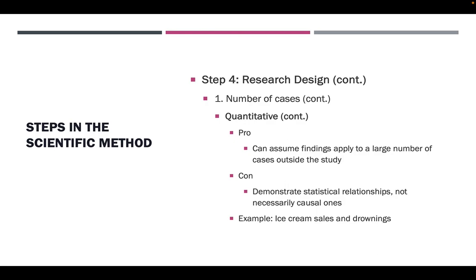Thus, our findings are more widely applied. A major disadvantage is that the relationships we discover using the large N approach are of a statistical nature, and not necessarily causal. There are many instances of statistically significant correlations being well-established for seemingly random activities. A famous example is that there is a very high statistical correlation between ice cream sales and drownings. One would be hard-pressed to say that one caused the other. Can ice cream cause drownings? Probably not, unless the ill-fated swimmer ingested an enormous amount of ice cream. And it's unlikely that anyone would consume large amounts of ice cream when confronted with the news of frequent drownings.